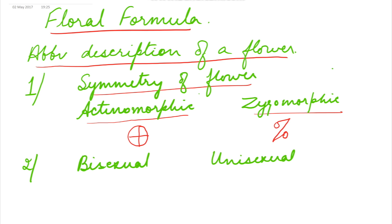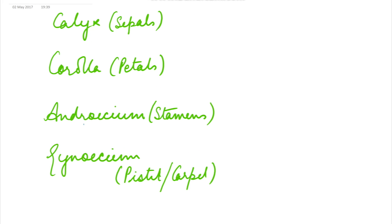Next to be written is whether the flower is bisexual or unisexual. Bisexual is written with its symbol, while for unisexual flowers, a female flower and male flower each have their own symbol. Next is the calyx — the outermost part of the flower, made up of sepals. It is written in abbreviated form as K, with the number of sepals written below. If the sepals are united (gamosepalous), a bracket is formed; if the sepals are free, there is no bracket.